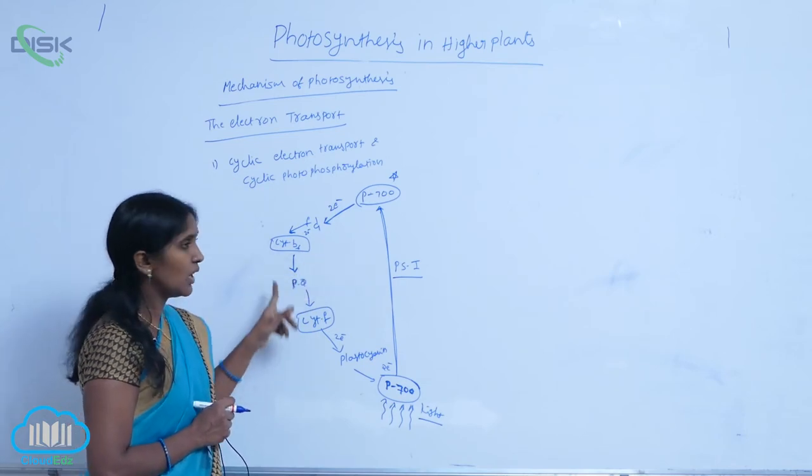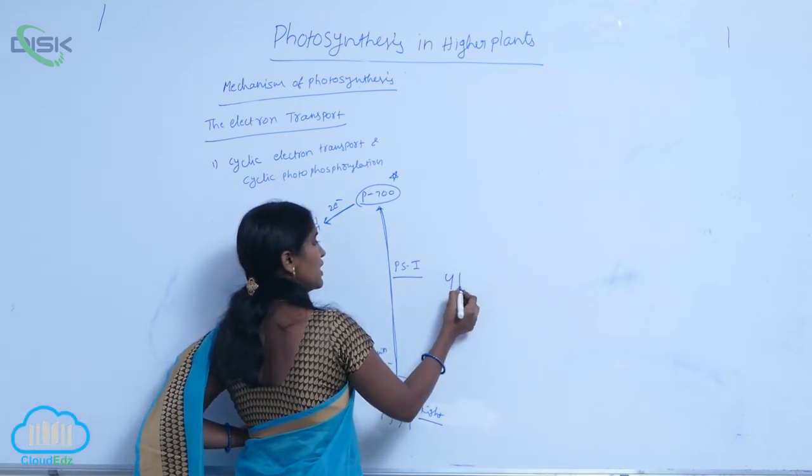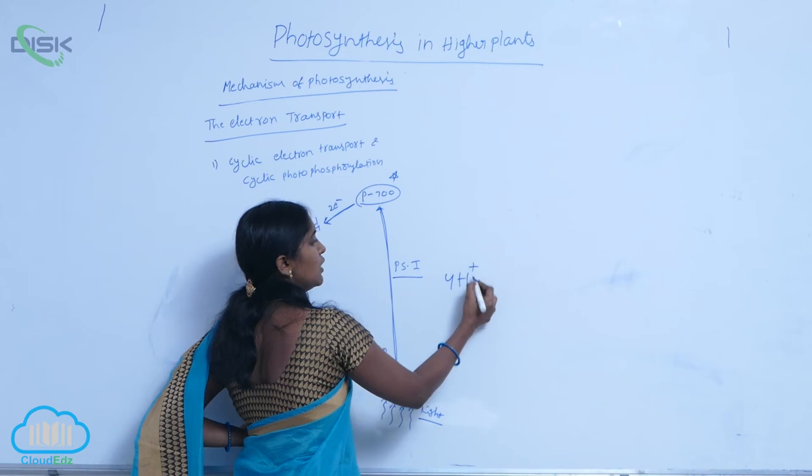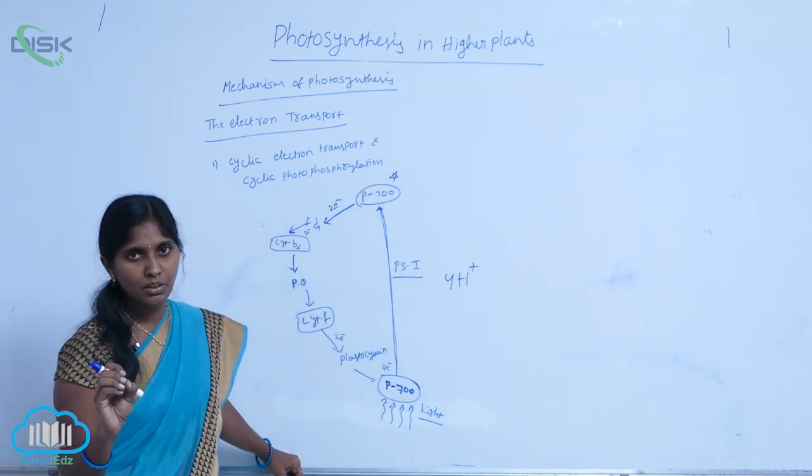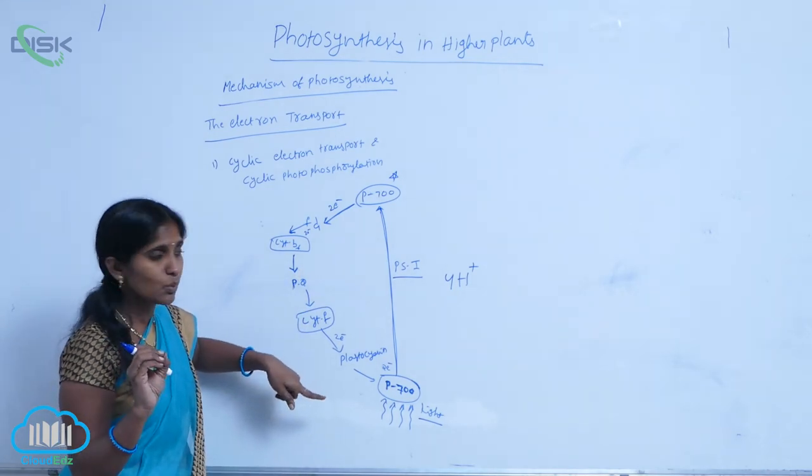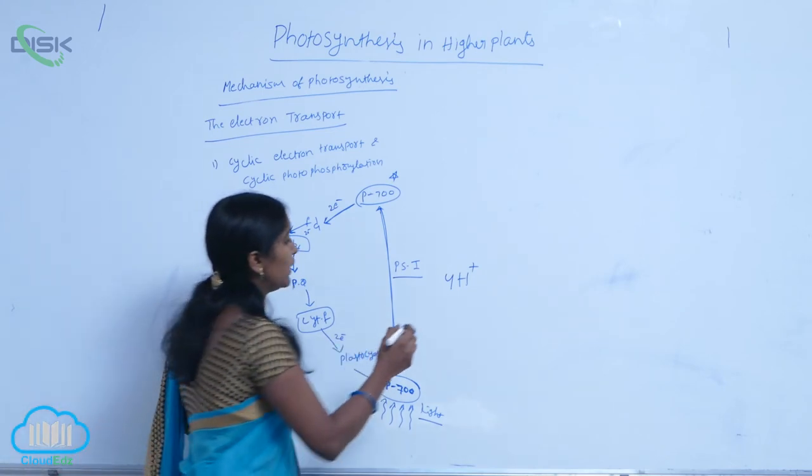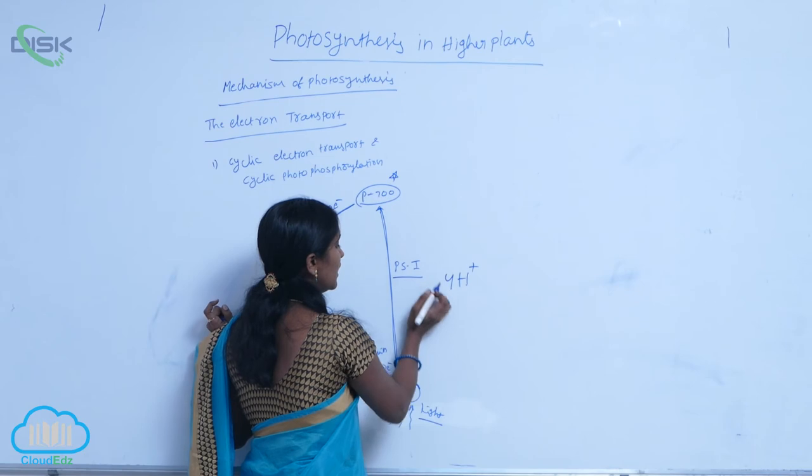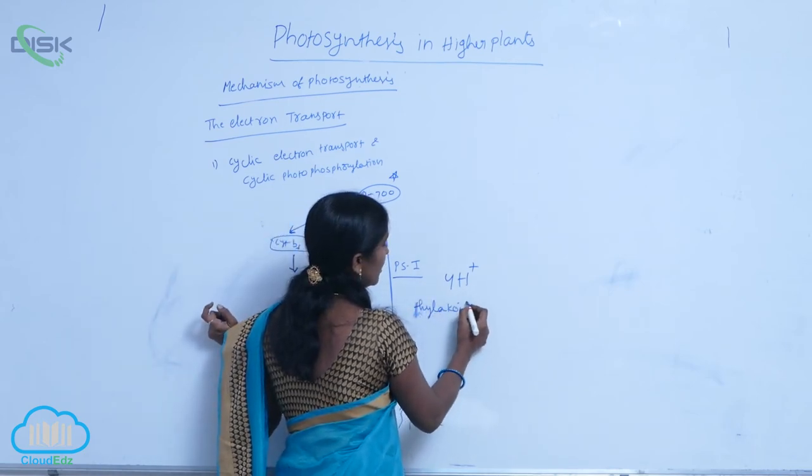During electron transport, proton accumulation and translocation also occur. For every one electron, two protons are translocated. Since two electrons are transmitted here, four protons are translocated into the thylakoid lumen.